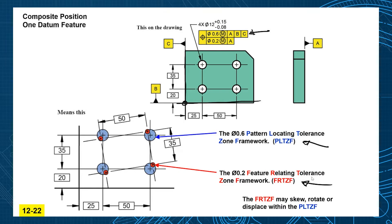I don't think anybody cares about the PLTZF and the FRTZF names, but that one's locating to the datums, the other one's locating to each other. And also it's going to be relative to A, and that's rotation orientation only, so that's controlling the perpendicularity relative to our A plane.